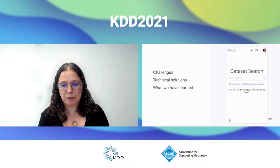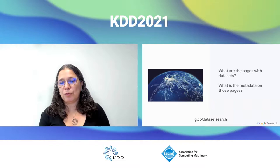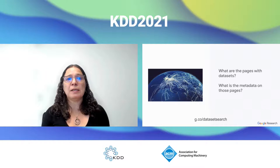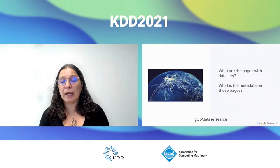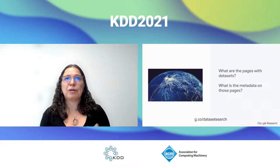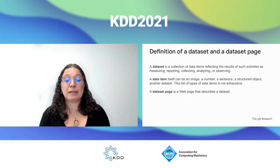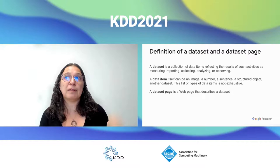When building a search engine for all datasets on the web, there are two basic questions. When we come to a web page, we need to distinguish pages that describe datasets from all other pages. And once we decide this is a dataset page, we try to extract metadata about the dataset: what is the title, description, how it was created, spatial and temporal coverage, license, which paper cited it, and so on. It actually took us a couple of years to focus on the definition of a dataset itself, because there are so many definitions.